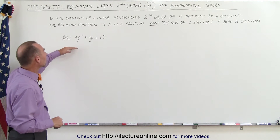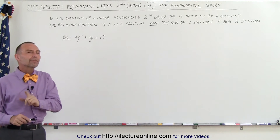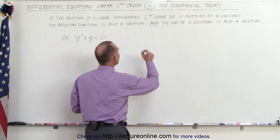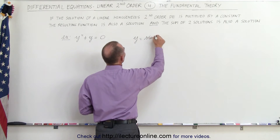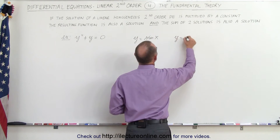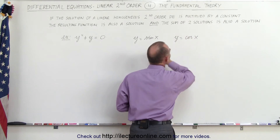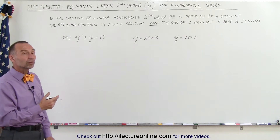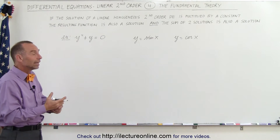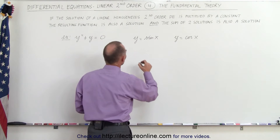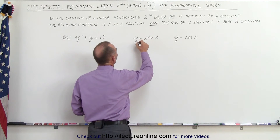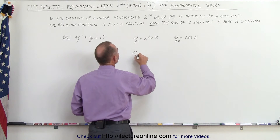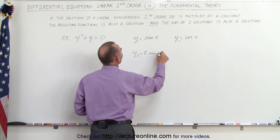Let's start with the equation Y double prime plus Y equals zero, because we've seen that before in a previous video. We knew that the solution to this can be Y equals sine of X, or Y equals cosine of X. Either one of these were solutions to the differential equation. Let's call this Y1, this Y2, and a third function Y3 equal to five times the sine of X.